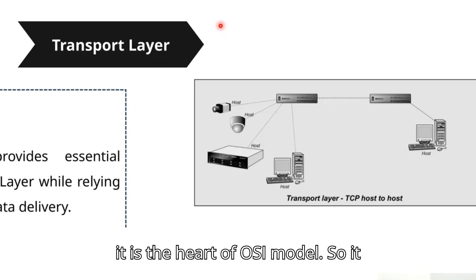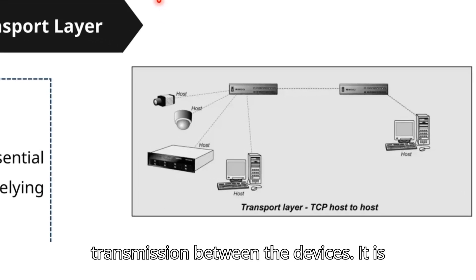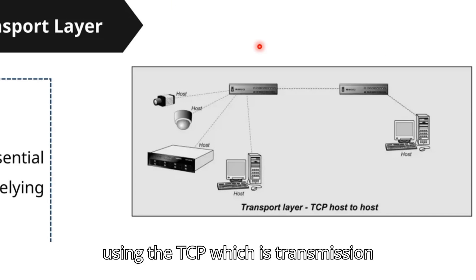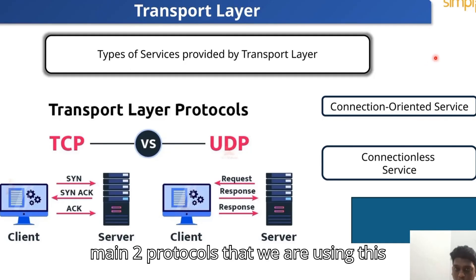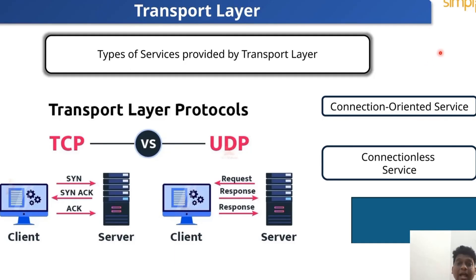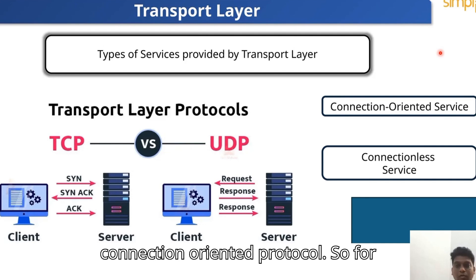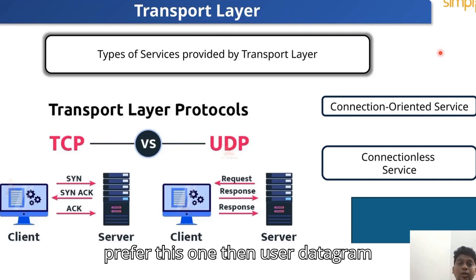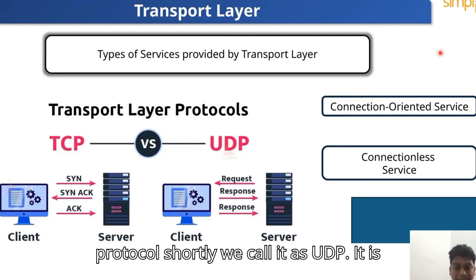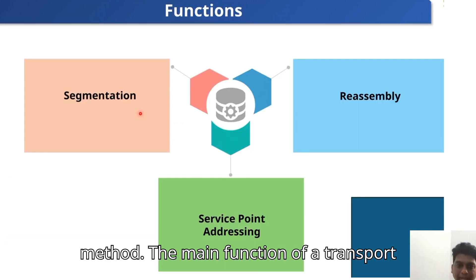The Transport layer is considered the heart of the OSI model. It ensures reliable and efficient data transmission between devices. The two main protocols used are Transmission Control Protocol (TCP), which is reliable and connection-oriented and preferred for file transfers and emails, and User Datagram Protocol (UDP), which is unreliable and connectionless.